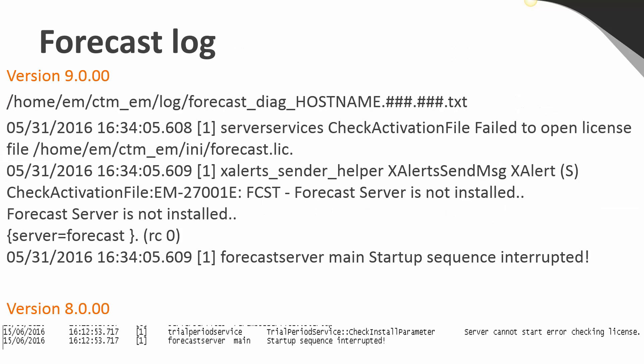Another way to tell is by looking in the log directory in Enterprise Manager on the EM server. You will see one or more Forecast logs with information like this, where it cannot find the Forecast license file — in this case on a Unix host. Here are two examples from both versions 9 and 8, and the message 'Forecast server is not installed' or 'error checking license' lets us know that this is the exact reason it won't start in the CCM.